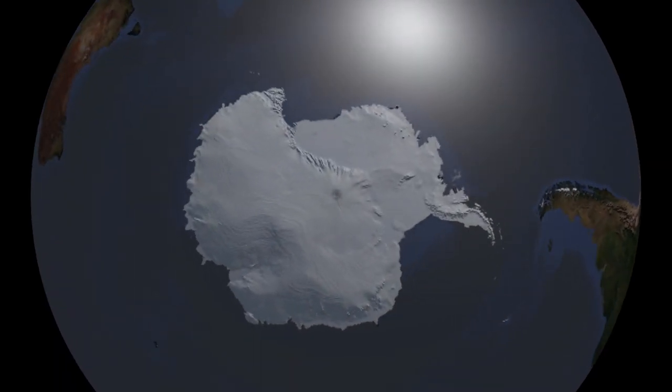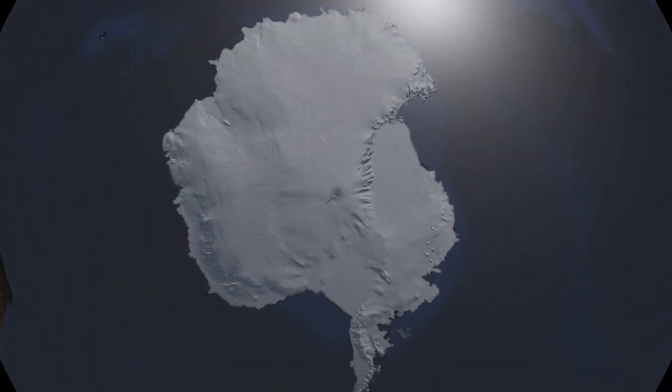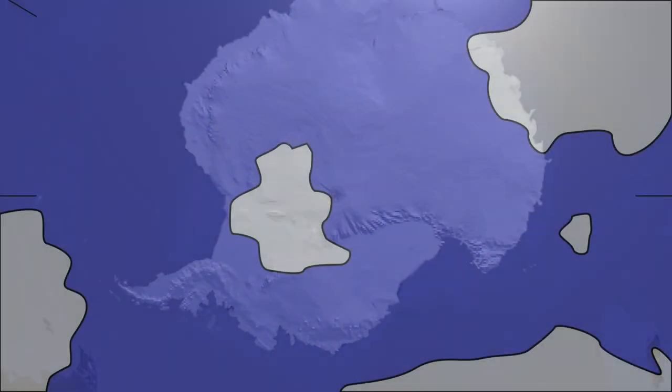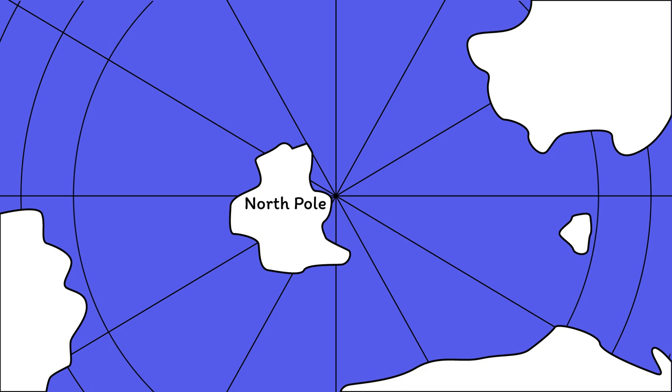As you get towards the pole, it makes more sense to use what we call a polar projection. Parallels of longitude all converge towards the pole, and parallels of latitude appear to curve.